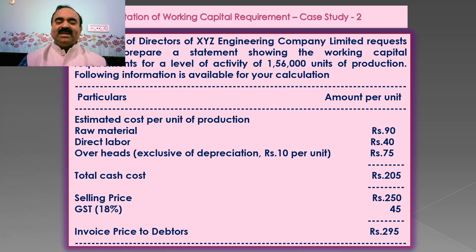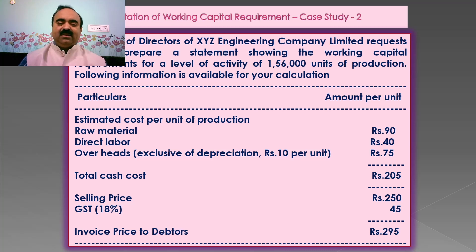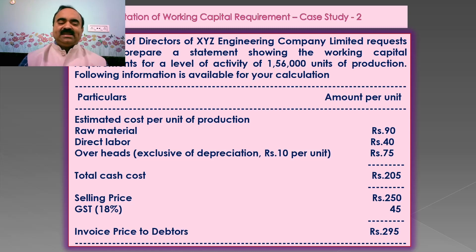The estimated cost per unit of production is given. Raw material per unit cost is Rs. 90, direct labor per unit cost is Rs. 40, overheads per unit cost is Rs. 75, total cash cost coming to Rs. 205. Selling price is Rs. 250, GST 18% determined as Rs. 45, and invoice price to debtors is Rs. 295.